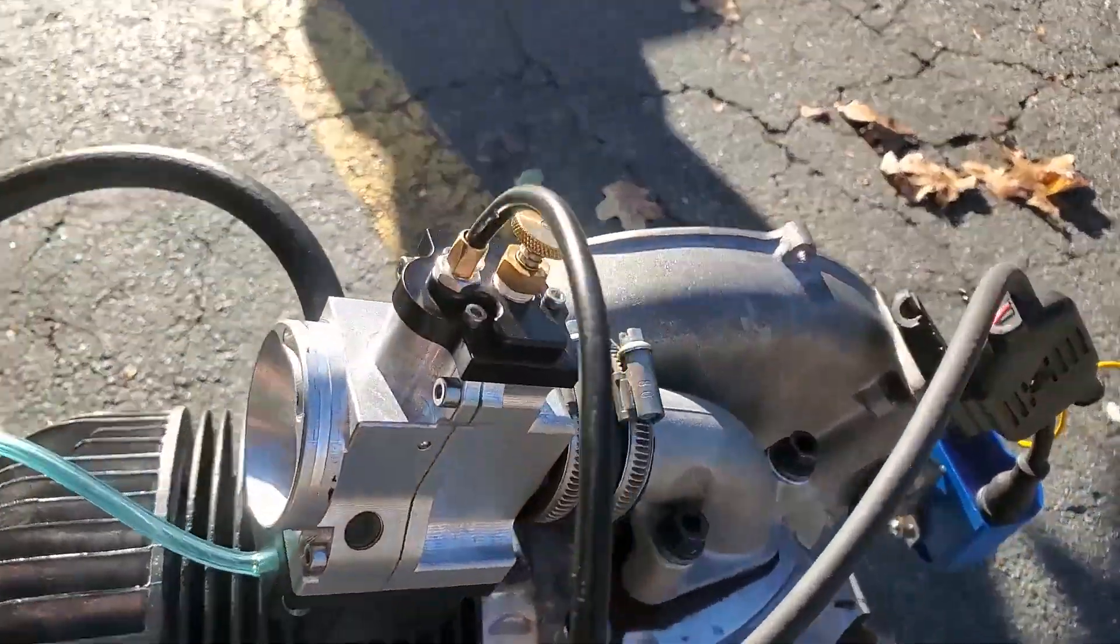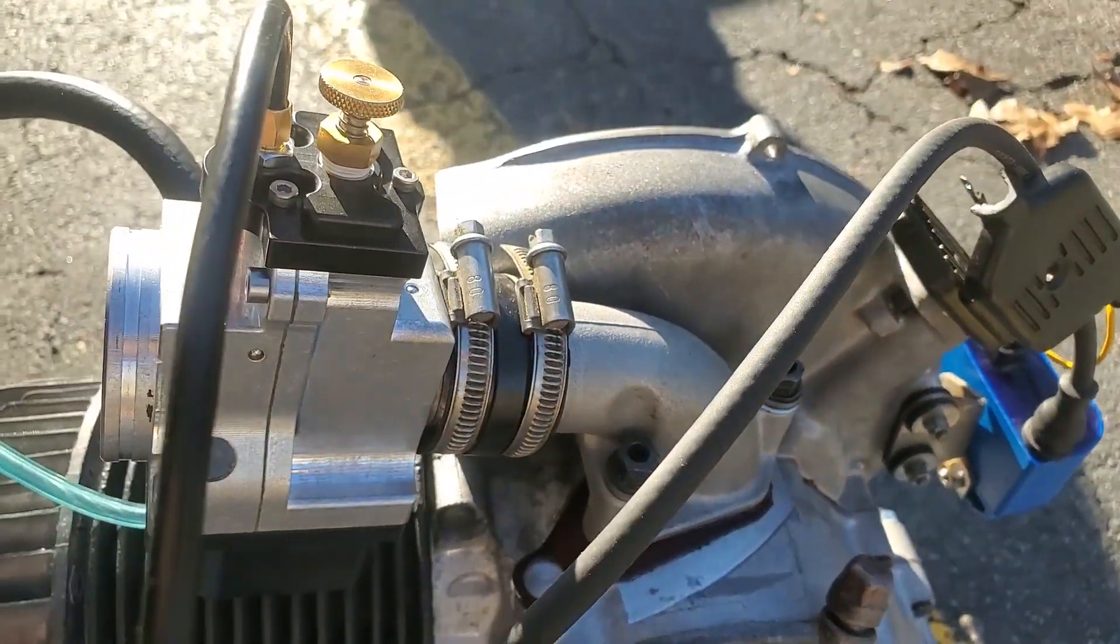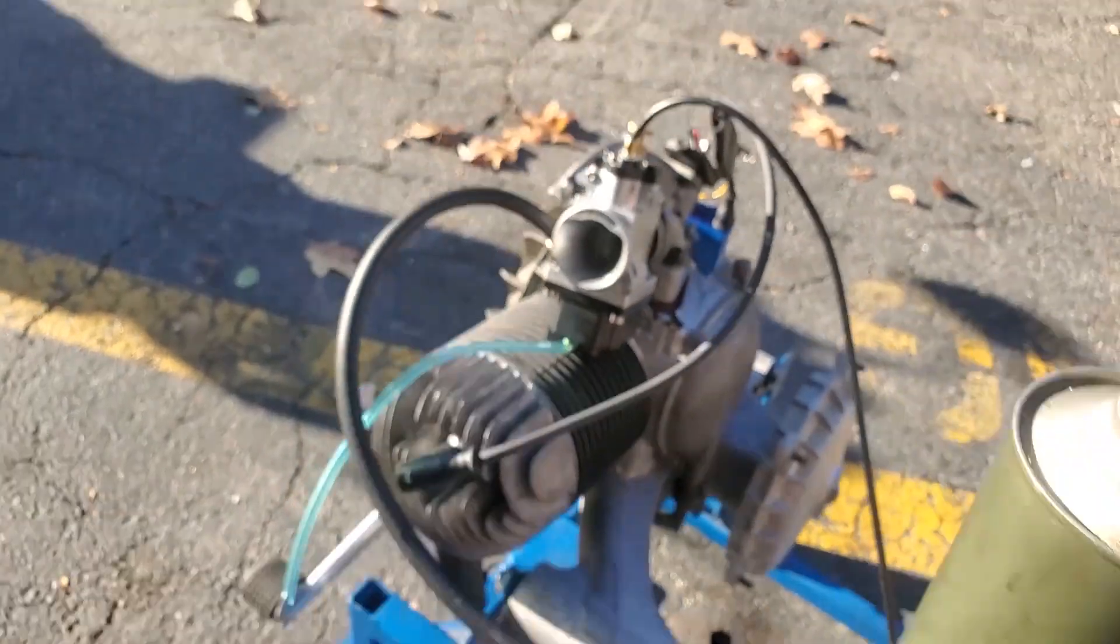To mount it on the 208 I used the Polini intake with a little spacer to help with more clearance. This is a Polini intake issue, not really a SmartCarb problem.